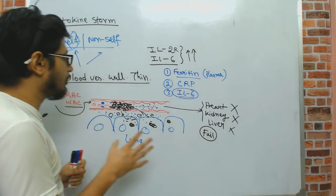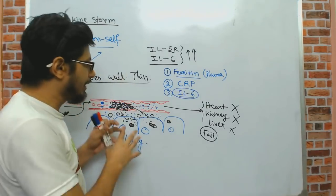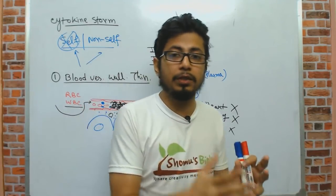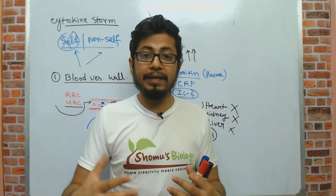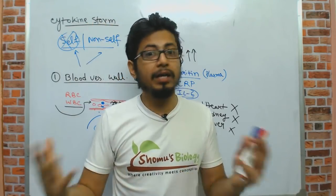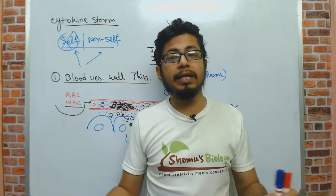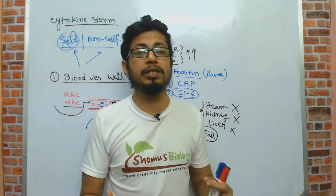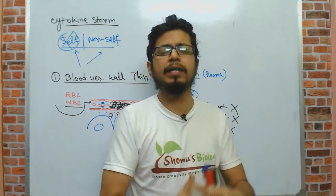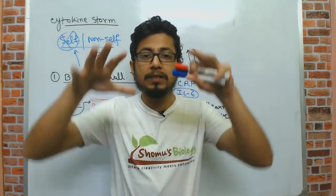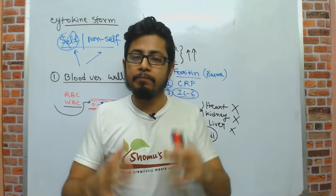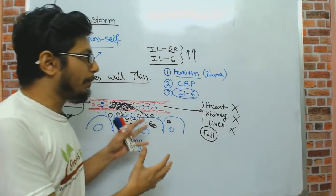If ferritin, CRP, or IL-6 are elevated, we can identify a risk of cytokine storm and act. The approach is to suppress cytokine release using immunosuppression drugs — which is an irony. In a viral infection where our immune system should protect us, it instead works against us, and we must suppress our own immune system with immunosuppressive drugs to protect ourselves from our own defense mechanisms.